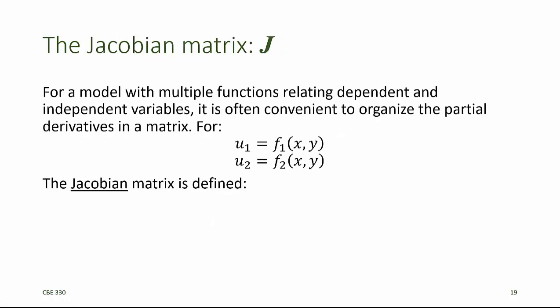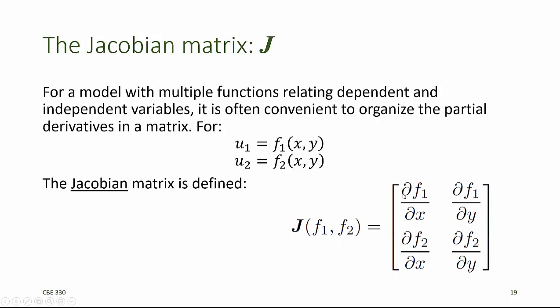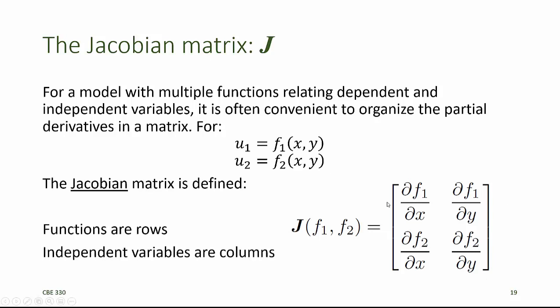Another notation briefly introduced in the previous lecture is the Jacobian. For a model with multiple functions relating dependent and independent variables, it's frequently convenient to organize the partial derivatives in a matrix. If dependent variable u1 is a function f1 of x and y, and dependent variable u2 is a function f2 of x and y, then the Jacobian is defined as the matrix of partial derivatives of those functions with respect to each of the variables. Each function is represented by a row in the Jacobian, and each of the independent variables is represented by a column. Anytime we see the Jacobian operator, we know that we're looking at a PDE model equation.